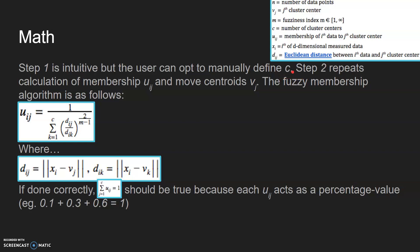Step two basically repeats the calculation of membership UIJ and moves centroid to VJ. The fuzzy membership algorithm goes as follows: UIJ equals 1 over C sigma K equals 1, and then you have the Euclidean distance of each data from the centroid.